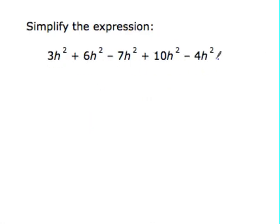These are all like terms. They all say h to the second power. So let's use the coefficients. 3 plus 6 is 9, 9 minus 7 is 2, 2 plus 10 is 12, and 12 minus 4 would be 8h squared.